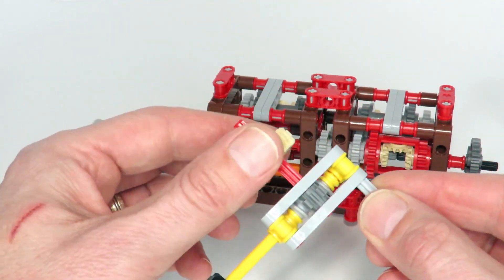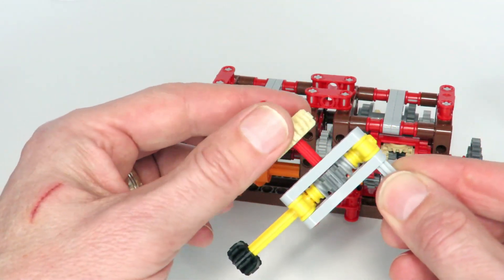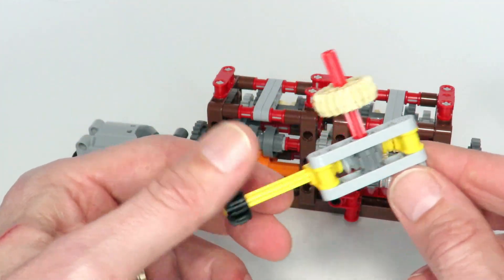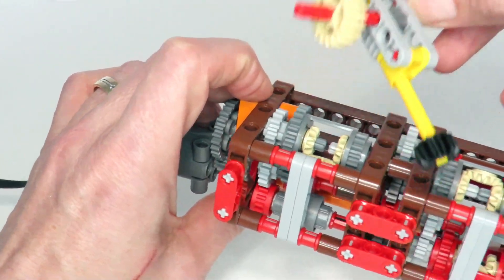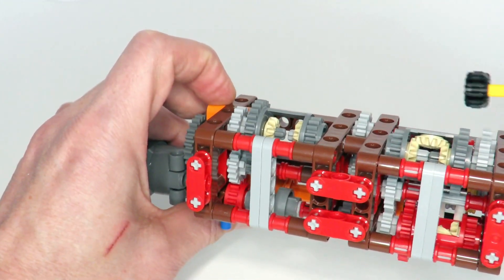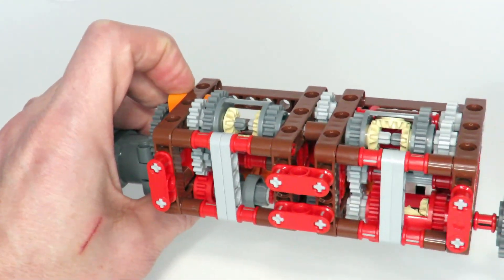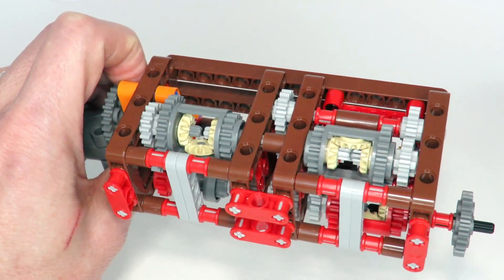So again the worm gear has got the same properties. We can rotate the input like that and that will rotate the red output, but we can't rotate the red output and turn or drive the input. So that again is a lot smaller than the differential configuration to achieve the same effect.